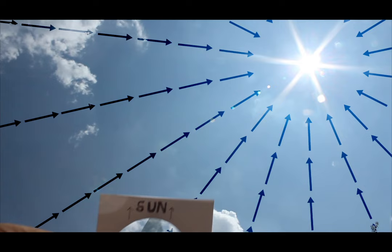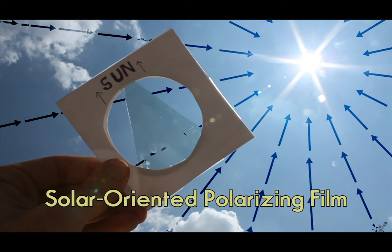Devices like polarized film, sunglasses, or honey bee eyes can detect this orientation and determine the position of the sun even while looking in the opposite direction.